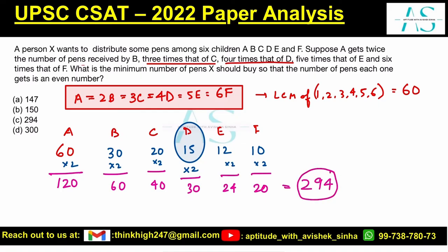This is the minimum number of pens that X should buy so that each one gets an even number of pens. 294 seems to be the correct fit here.